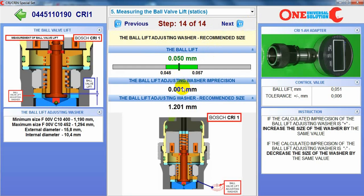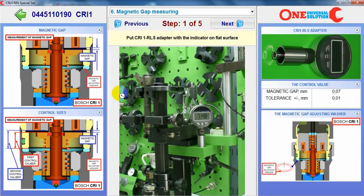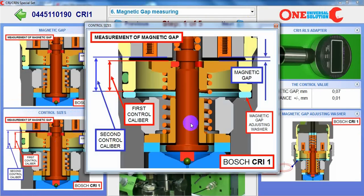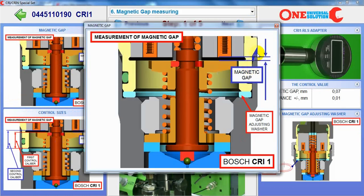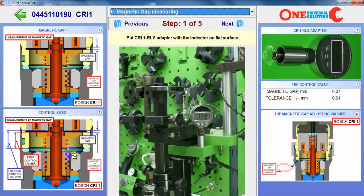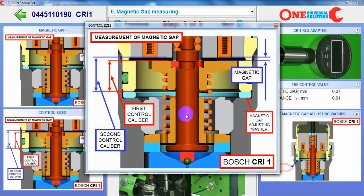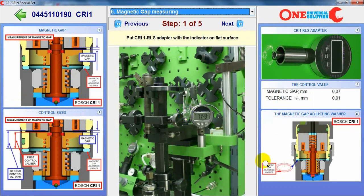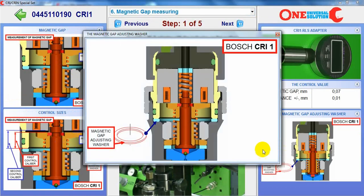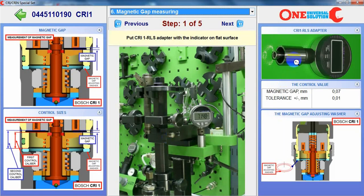The result is good — one micron is nothing. The next step: we can measure the magnetic gap, and we will choose the correct size of magnetic gap adjusting washer using the control and this adapter.